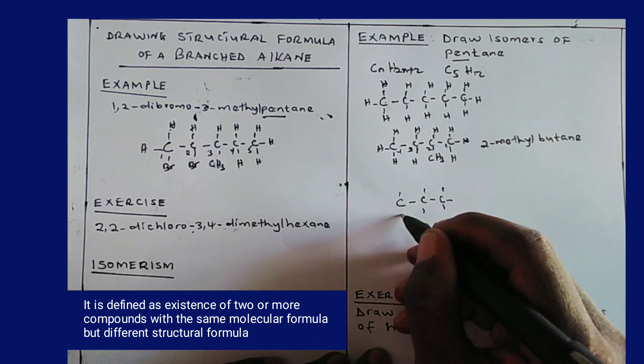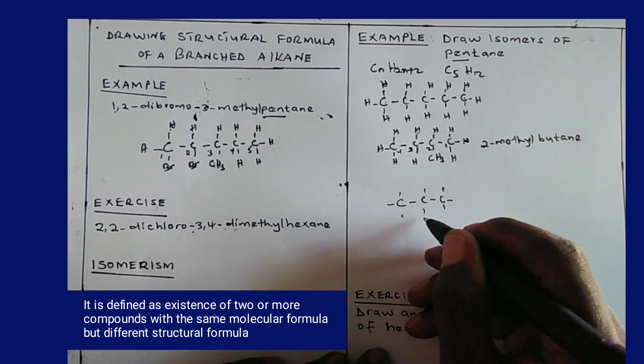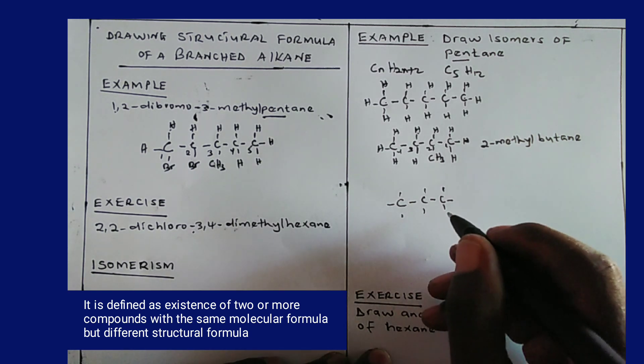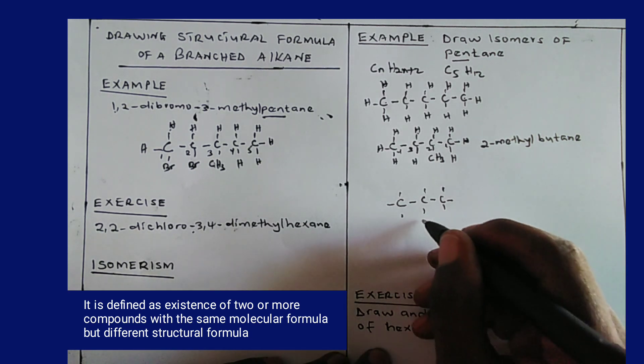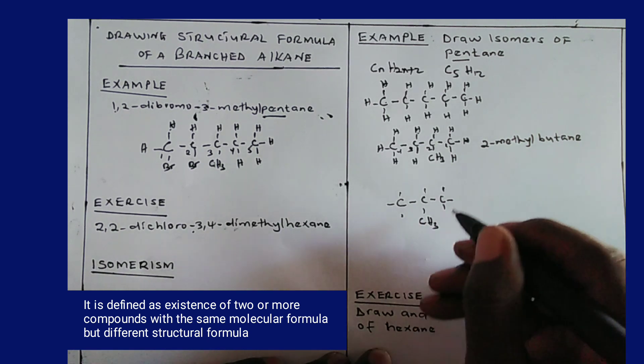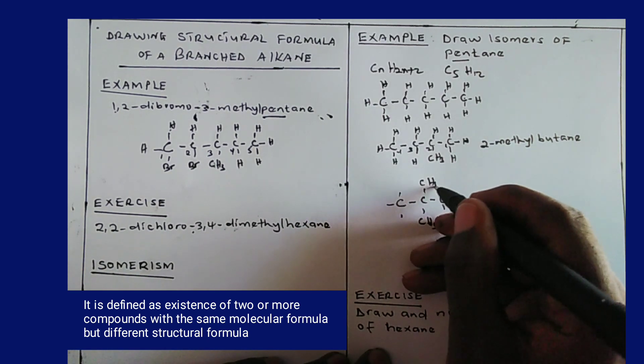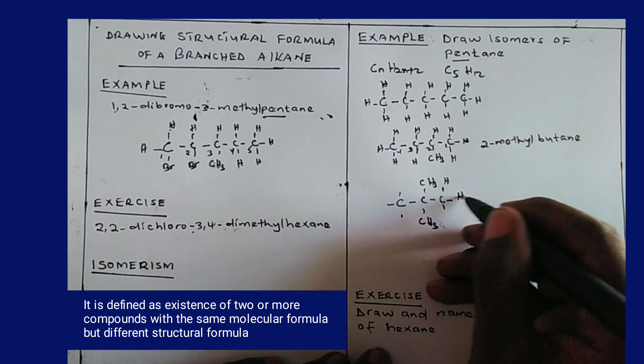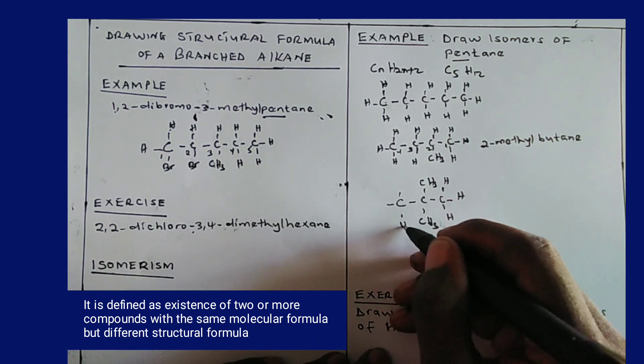then I join all of them with bonds to make four. Now the two carbon atoms removed form methyl branches. So I place here CH3 and I place here CH3. Then the rest I place hydrogen atoms.